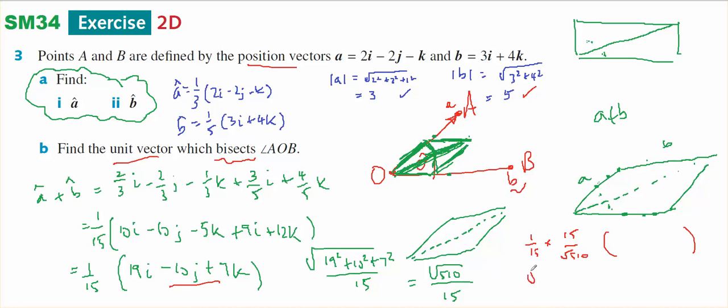And to rationalise the denominator, the square root of 510 divided by 510, 19I minus 10J plus 7K will be the unit vector that bisects this angle. And I needed to use the diagonal of a rhombus. Okay, that's it.